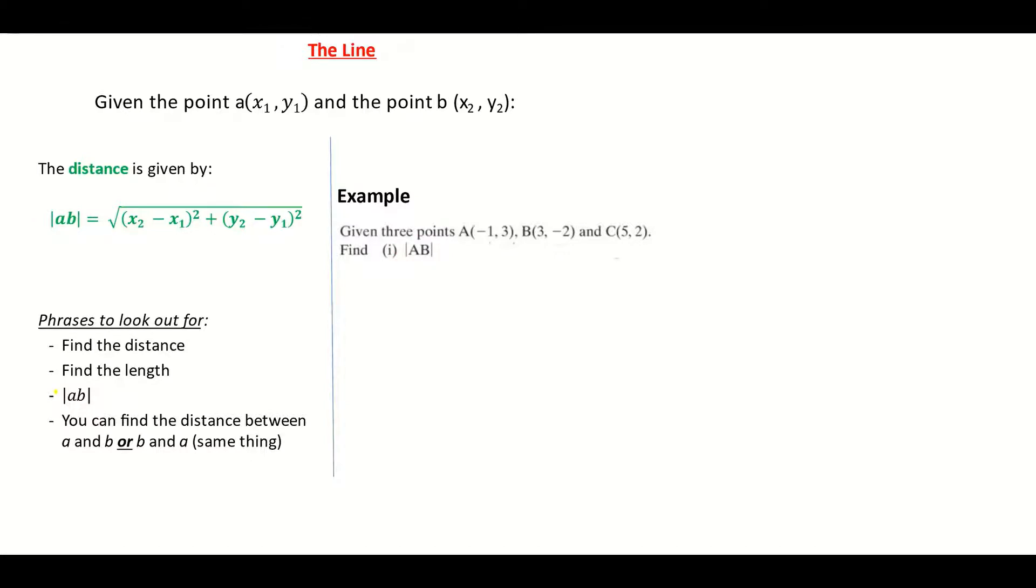Now, I've given you three points. The first one it wants us to do is find the distance from A to B. So I'm just going to write down my two points, A and B. And my A is (-1, 3). And my B is (3, -2).